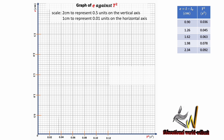Plotting the points: when T² = 0.036, e = 0.9; when T² = 0.045, e = 1.26; when T² = 0.063, e = 1.62; when T² = 0.078, e = 1.98; and when T² = 0.092, e = 2.34. We mark out all the points and join them with a very straight line.